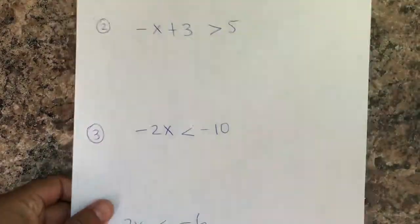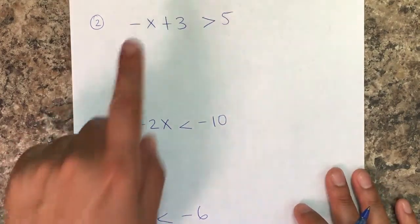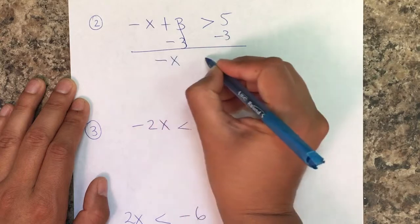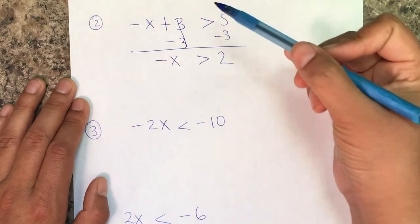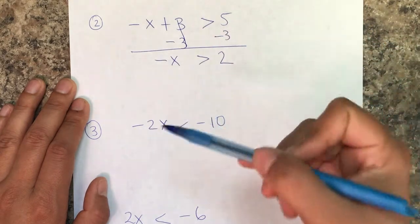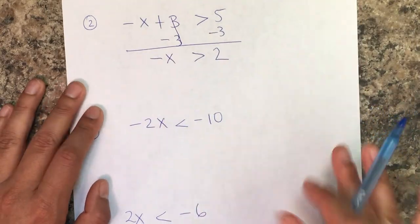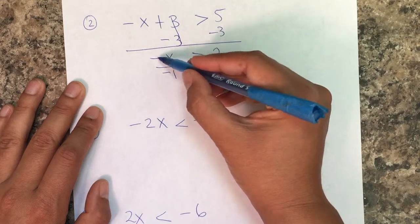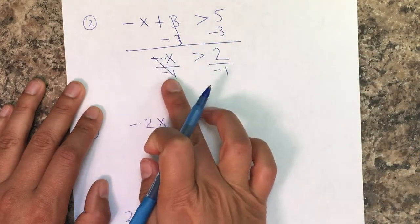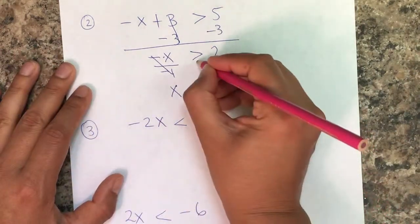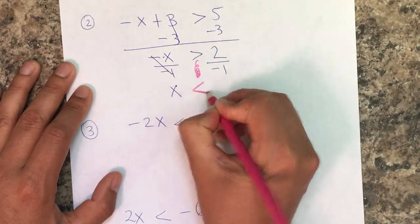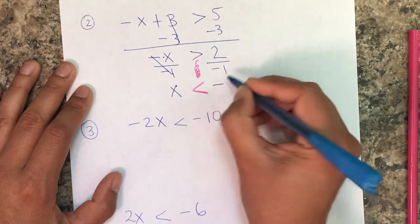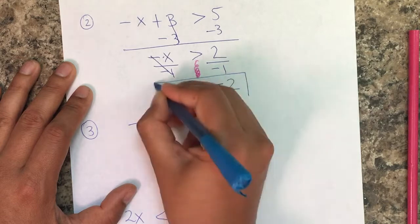Let's work some examples. If we're adding three, the opposite is to subtract three from both sides, giving us negative x is greater than two. Notice we are not switching the symbol — it's only switched in multiplication and division of a negative. Since we cannot leave the variable as negative, we divide both sides by negative one. Because we're dividing by a negative, the symbol switches — tornado! So x is less than negative two.